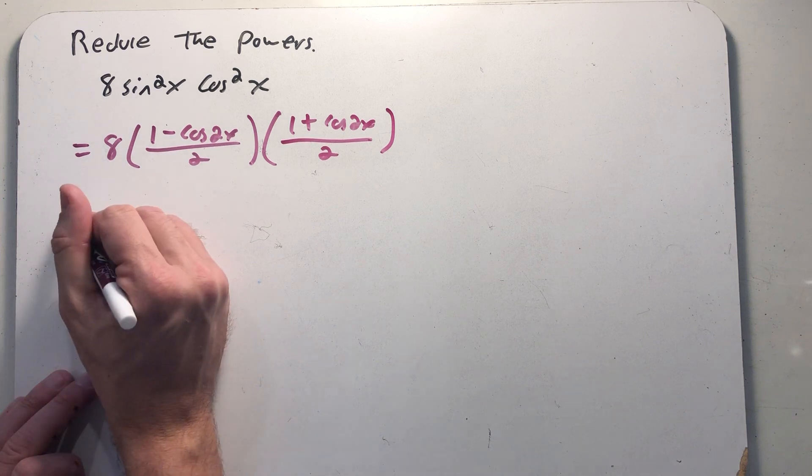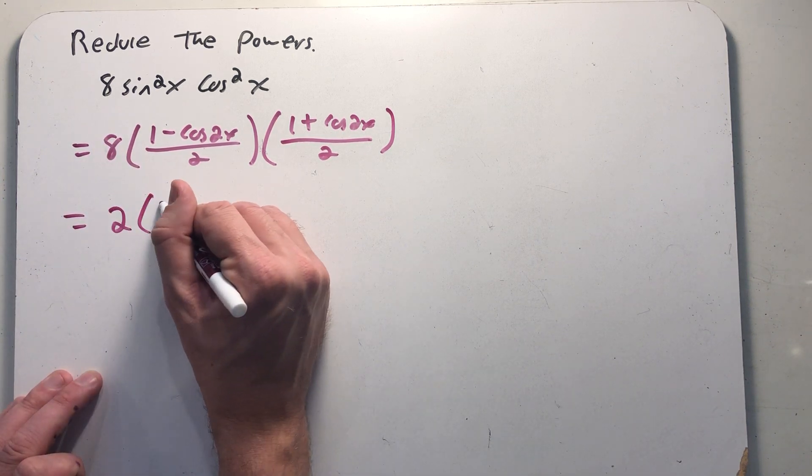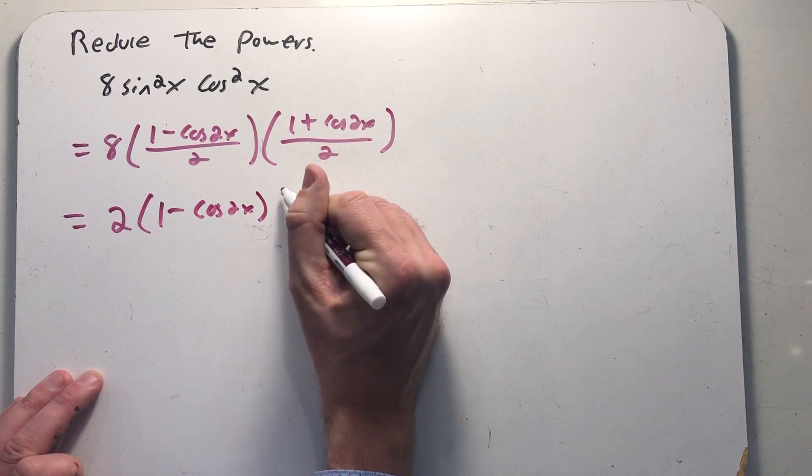2 times 2 is 4, of course, and 8 divided by 4 is 2, so here early on in the problem at least I'm rid of some fractions.